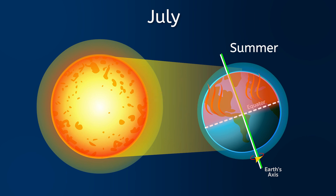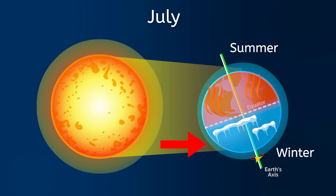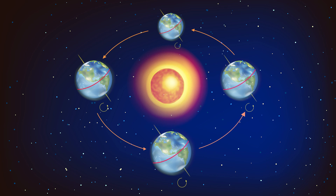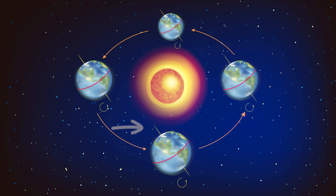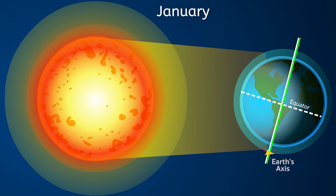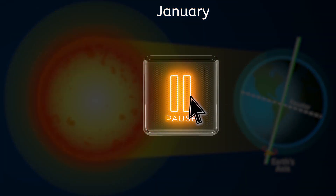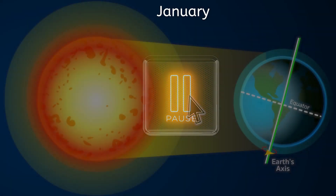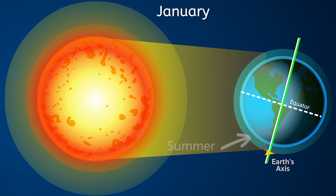At the same time, the southern hemisphere is getting much less direct sunlight. That doesn't mean it's dark, though. It just means the sunlight is indirect, making the days shorter and colder. So, July happens during summer in the northern hemisphere but during winter in the southern hemisphere. As Earth revolves around the Sun, it stays tilted in the same direction, causing the most direct sunlight to hit different parts of the Earth. So, during the month of January, it's summer in the southern hemisphere and winter in the northern hemisphere.